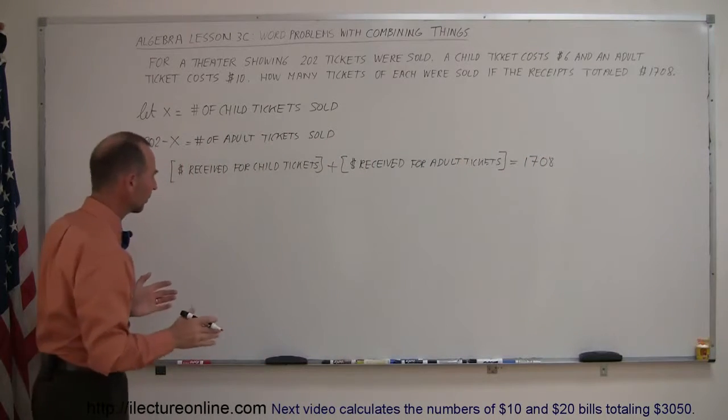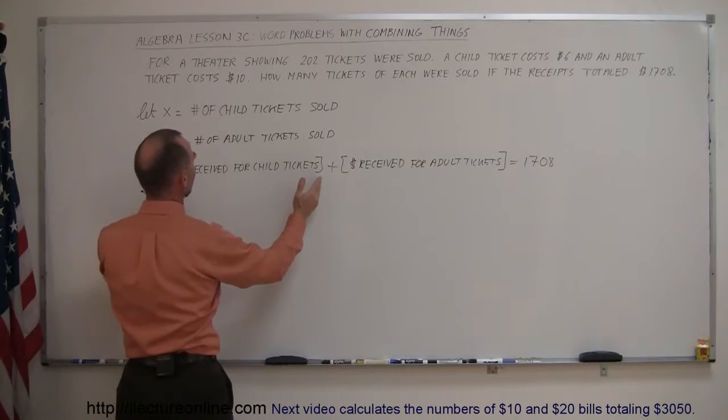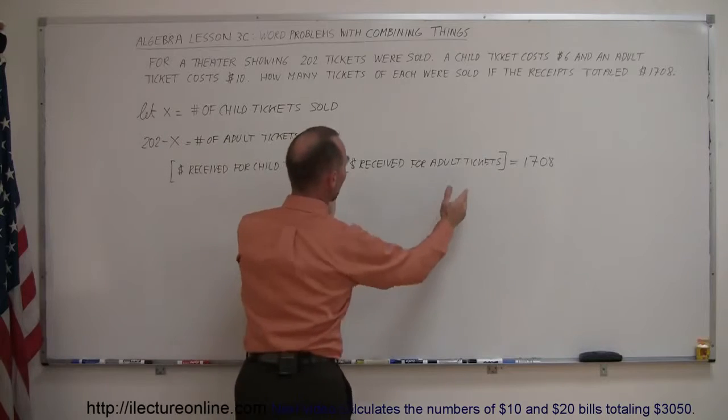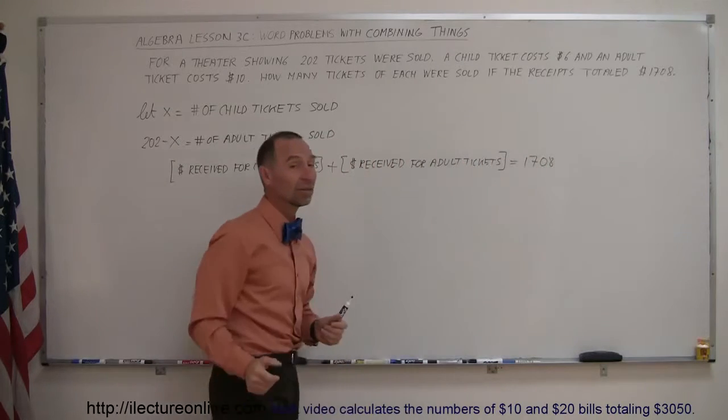Now, notice how, again, I write it out very, very long-handed, but again, it makes sense when you do this. This is the amount of money you receive for children's tickets. This is the amount of money you receive for adult tickets. Let's add them together. That should be the total amount of money you receive.